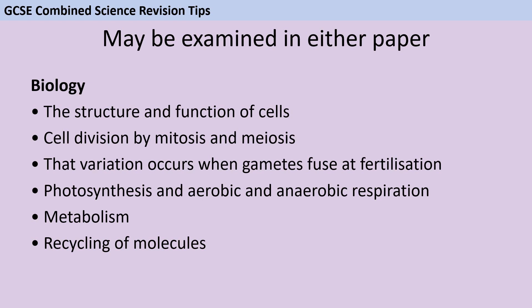GCSE biology has the longest list of these fundamental concepts which could come up in either paper, and also unlike chemistry and physics — where it's all traditionally paper 1 topics which could also come up in paper 2 — in biology we do have some paper 2 topics that could come up in paper 1. So you need to know about the structure and function of cells, cell division, variation from fertilisation, photosynthesis and respiration, metabolism and recycling molecules — basically things like the carbon cycle.